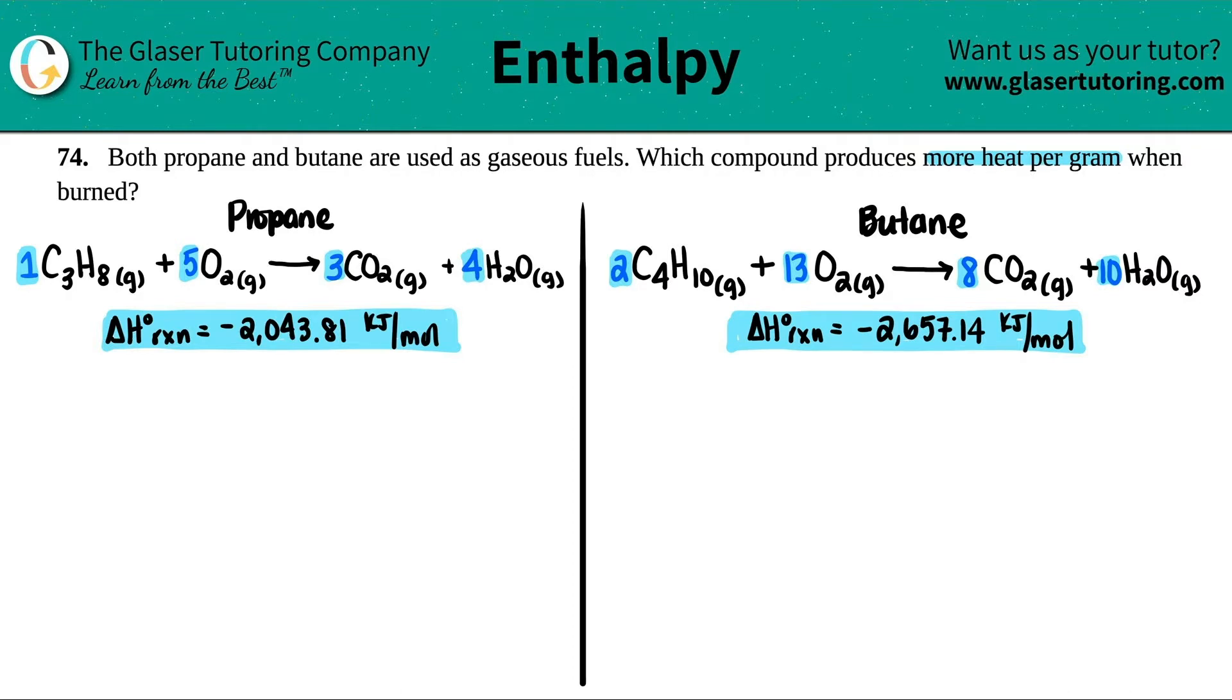So basically we found out how much heat is burned per mole, right? Because it's always kilojoule per mole. But we want to know what this would be in per gram. So dimensional analysis, I think, right?